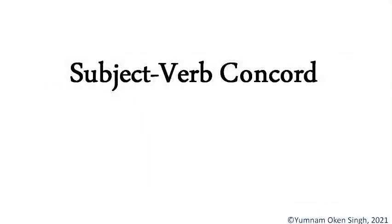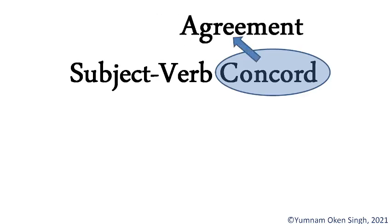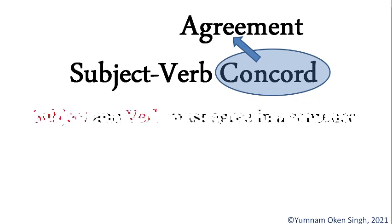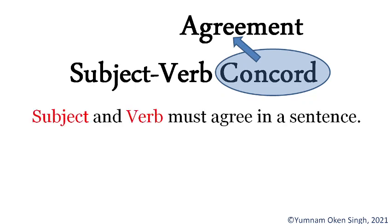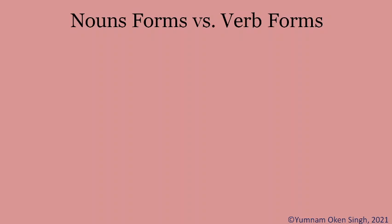Hello everyone, welcome to today's topic: Subject-Verb Concord. Concord means an agreement between the subject and the verb. In plain words, if the subject is singular it takes a singular verb, and if it is plural it takes a plural verb. Now let's see this in detail.